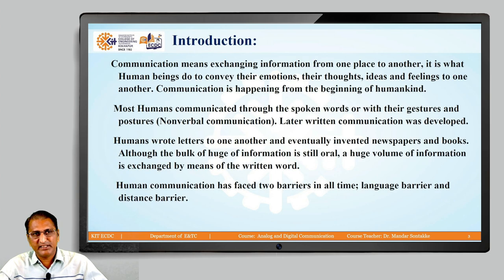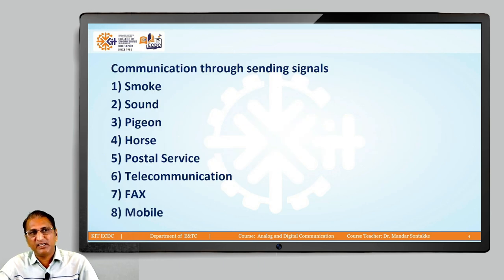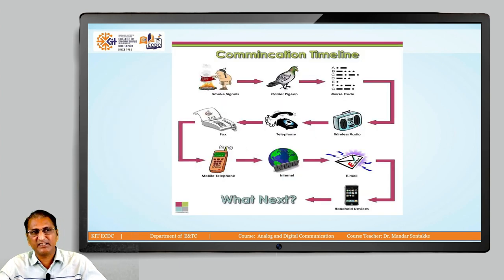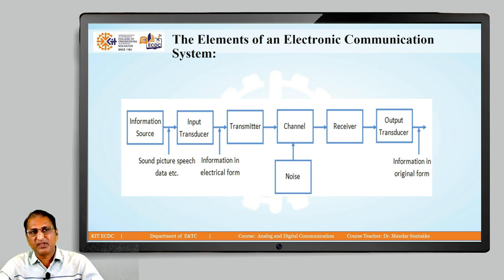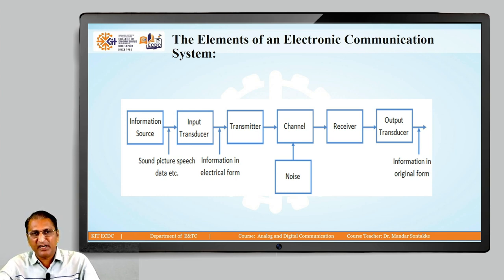So, up to this we have seen the introduction, the different communication signals — smoke, sound, pigeon, horse, postal service, telecommunication, fax, and now mobile everywhere. This is a timeline diagram of communication. These are the elements of an electronic communication system: any communication system requires information source, the original signal to be transmitted, input transducer, transmitter, channel, with the possibility of noise added in the channel, receiver, and output transducer. Whatever we transmit is the same as what we receive across the receiver. This is the block diagram of elements of an electronic communication system.